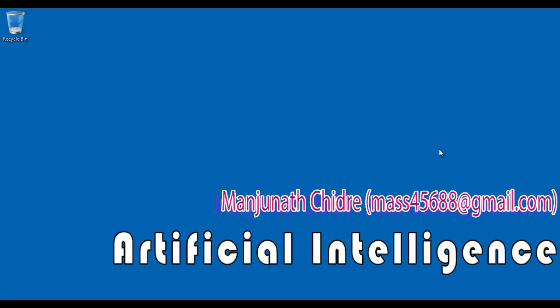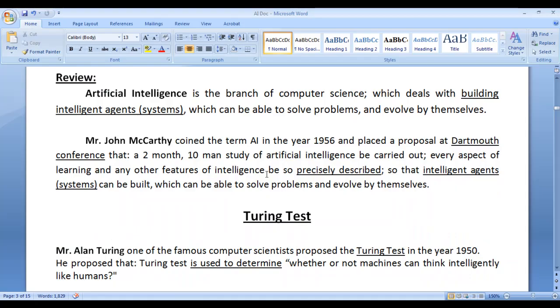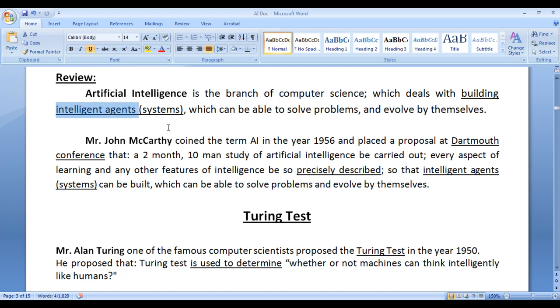Hello friends. Welcome to the artificial intelligence video tutorial series. In the previous video tutorials we understood that artificial intelligence is the branch of computer science which deals with building intelligent agents or intelligent systems which can be able to solve problems and evolve by themselves.